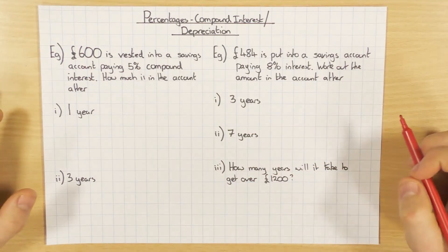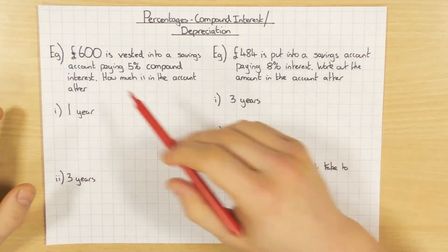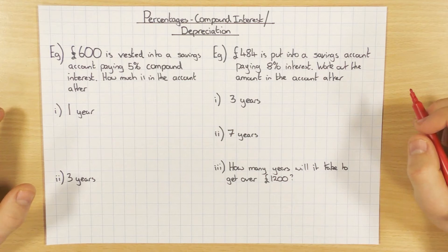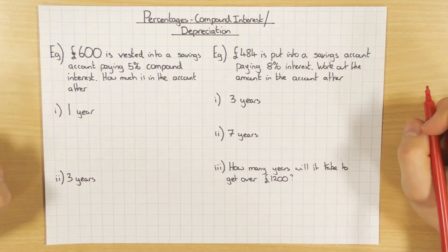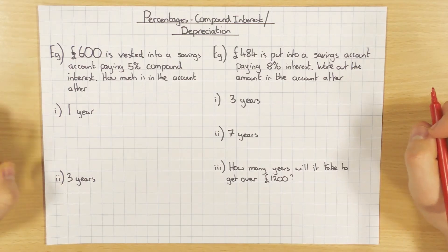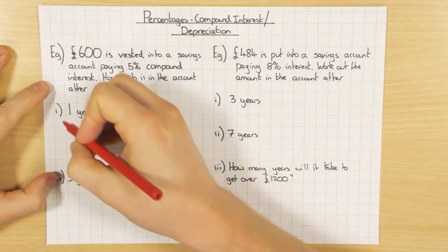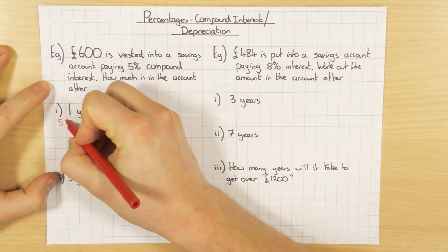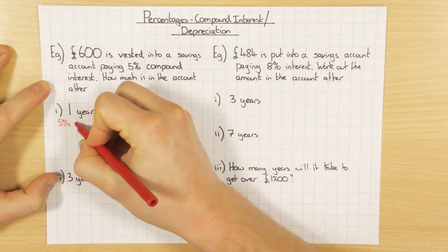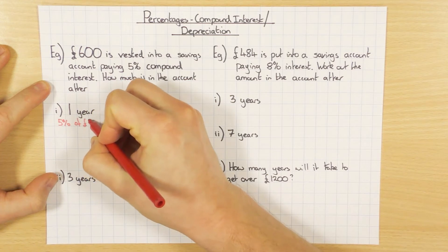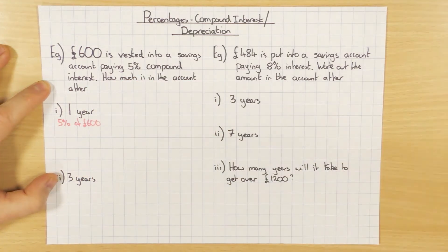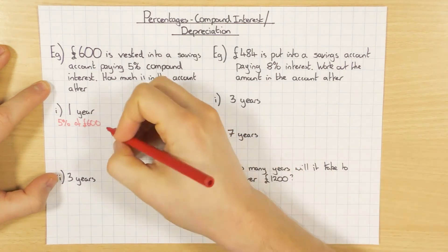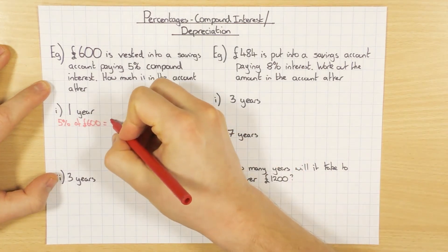So in this case I've got £600 and I invested it into a savings account paying 5% compound interest. I'm going to show you two ways to do this — I'll do the long-winded way first. So first, work out 5% of £600. Well, 10% is 60 so then 5% must be £30.